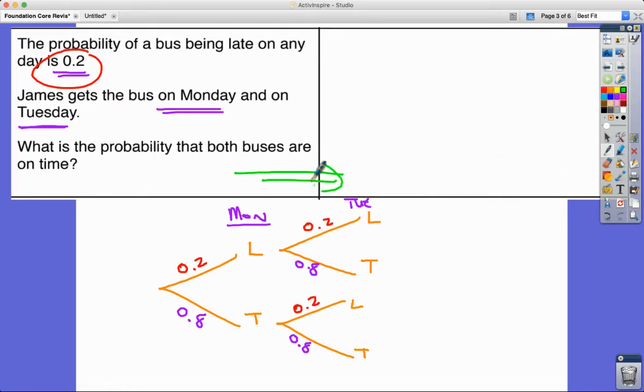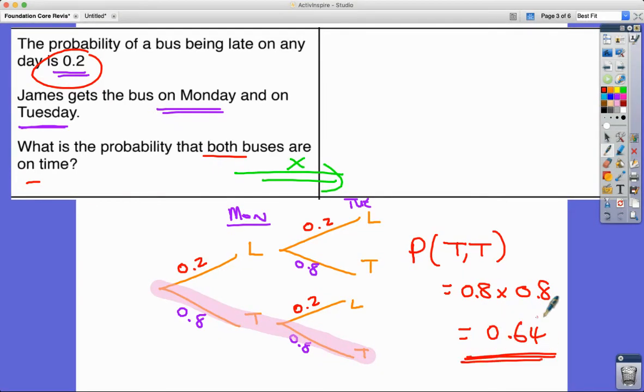The big trick here, the thing to remember with tree diagrams, is we always multiply going across the tree diagram. I'm looking for two independent events here and the probability of being on time, so on time followed by on time. It's this route here, on time followed by on time. I'm going to multiply those probabilities, so it's going to be 0.8 multiplied by 0.8, which is 0.64. There's a 64% chance that both buses are on time on Monday and Tuesday.